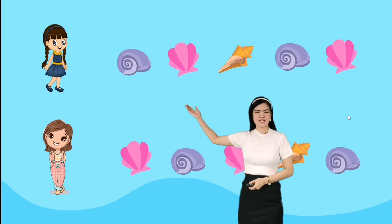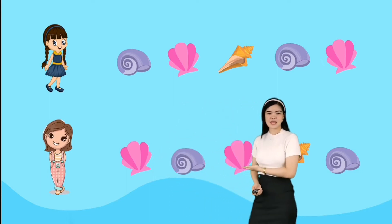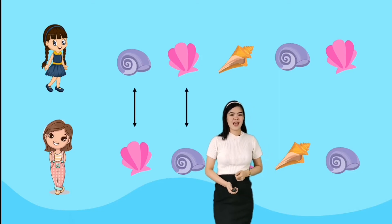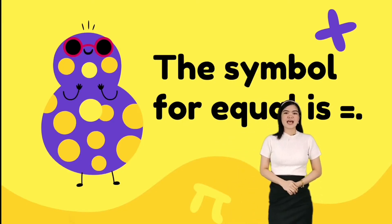The first symbol is the equal symbol. Janice and Citi are picking seashells at the beach. Janice has one, two, three, four, and five seashells. Citi also has one, two, three, four, and five. They have an equal number of seashells.